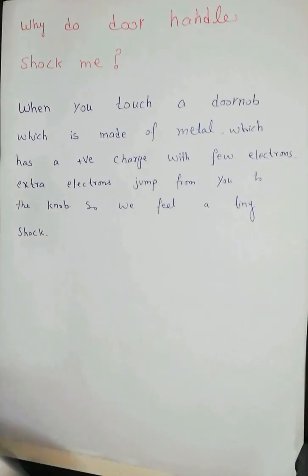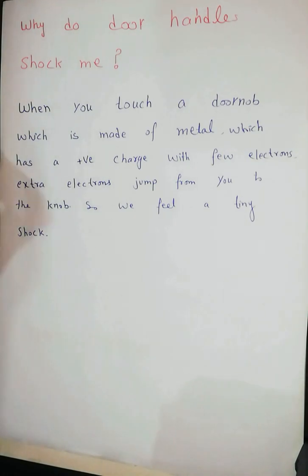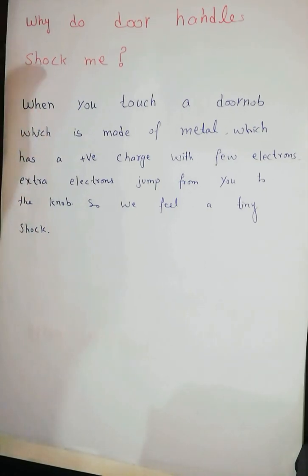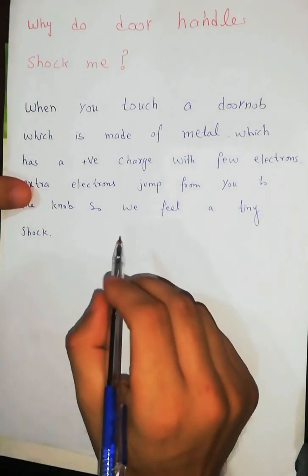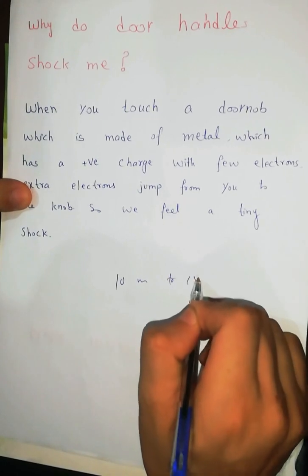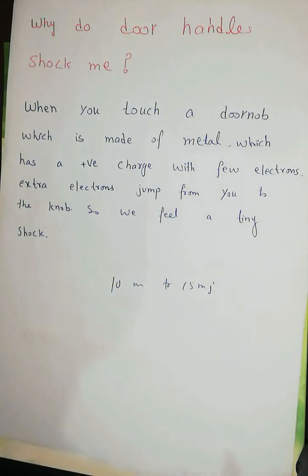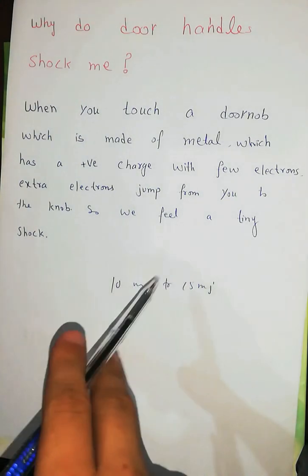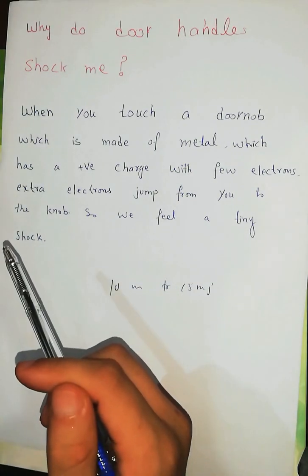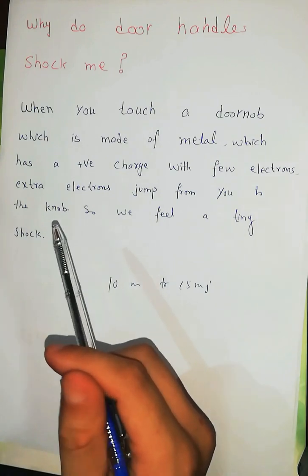Now let's move to the main topic: why do door handles shock me? When we rub our body on a carpet or any other object — especially carpet, because in that case 10 to 15 millijoules of energy is produced — and then we touch a doorknob which is made of metal and has a positive charge, the extra free electrons jump from our human body to the knob, and we feel a tiny shock. This is the triboelectricity effect.